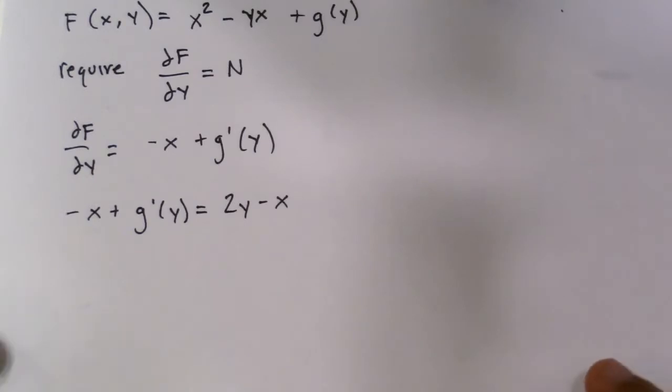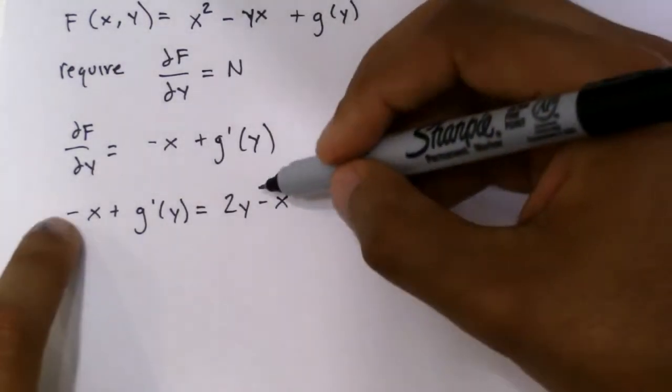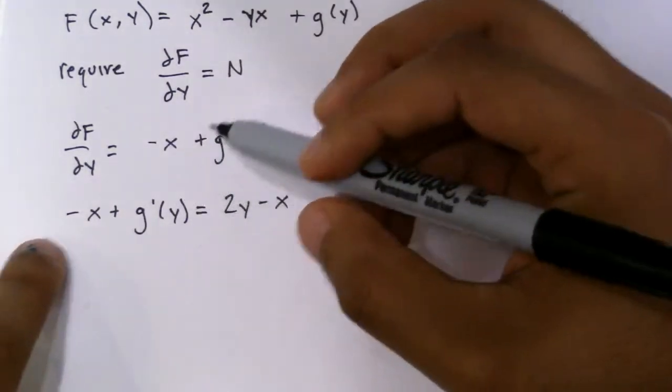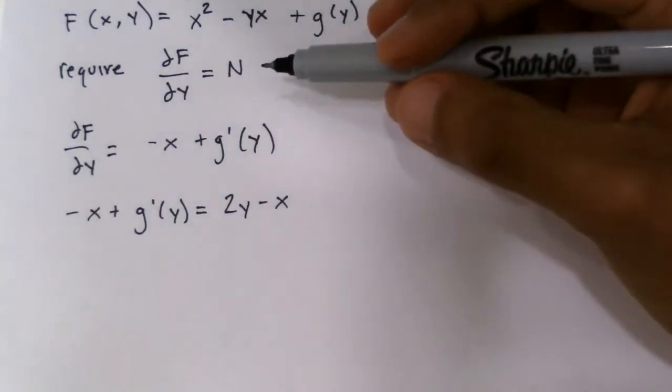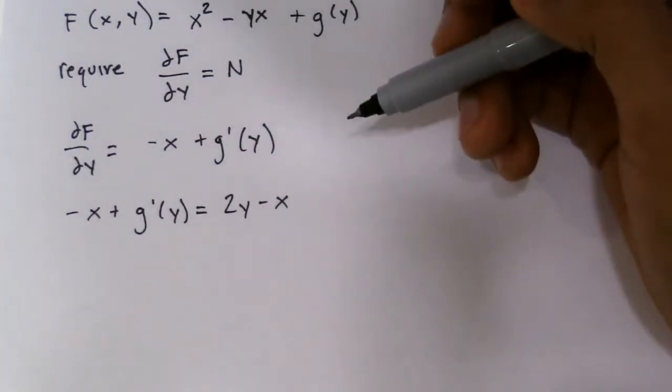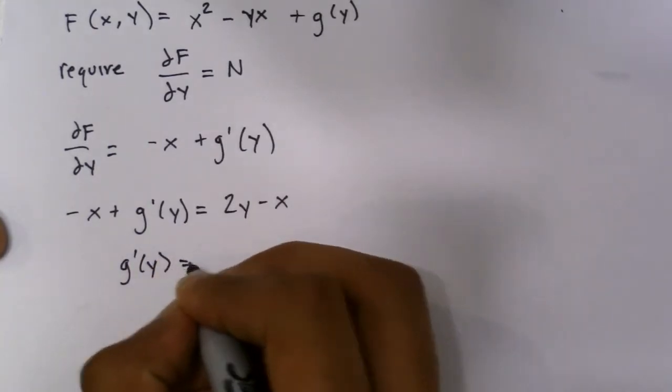So we get negative x plus g prime of y equals 2y minus x. So we could solve, or if you look at this, this should always happen. You should, all the variables except for y should cancel. So negative x, negative x are the same term on the different sides of the equation, so they just cancel. So such that you get g prime of y equals 2y.